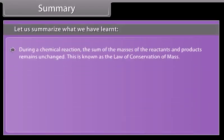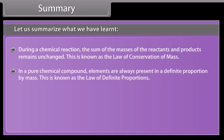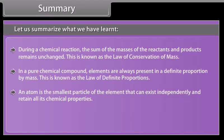In a chemical reaction, the sum of the masses of the reactants and products remains unchanged. This is known as the law of conservation of mass. In a pure chemical compound, elements are always present in a definite proportion by mass. This is known as the law of definite proportions.